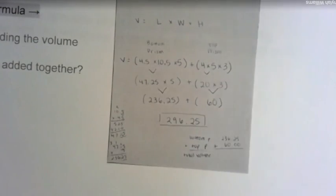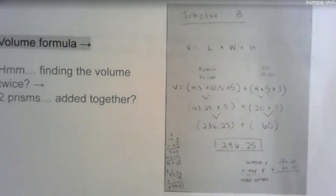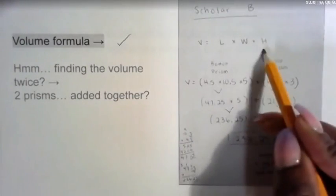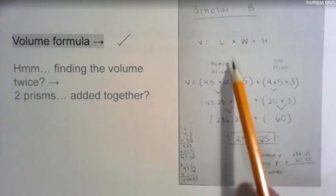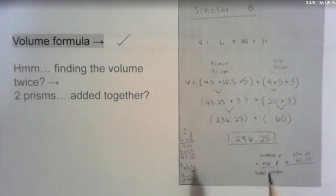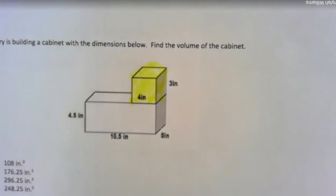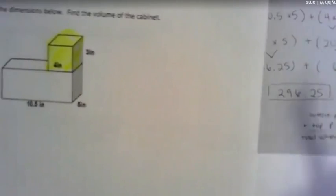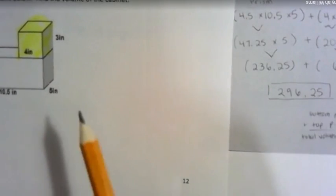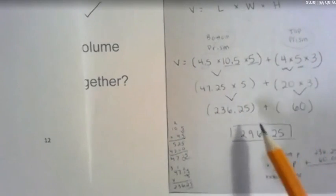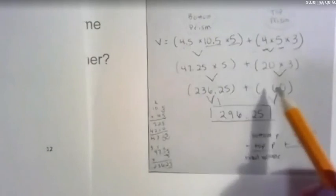When we take a look at scholar B, we want to be thinking about what they did correctly to solve this problem. Let's look at what scholar B did. They have the same volume formula: length times width times height, which is good. But it looks like they're finding the volume twice of a bottom and top prism. In the problem, they have top prism and bottom prism. What I highlighted here would be the top prism. And it looks like they annotated dimensions of the top prism as 4, 5, and 3, and dimensions of the bottom prism as 4.5, 10.5, and 5. So it looks like they found the volume of both prisms, volume one and volume two, and then added them together when they were done.